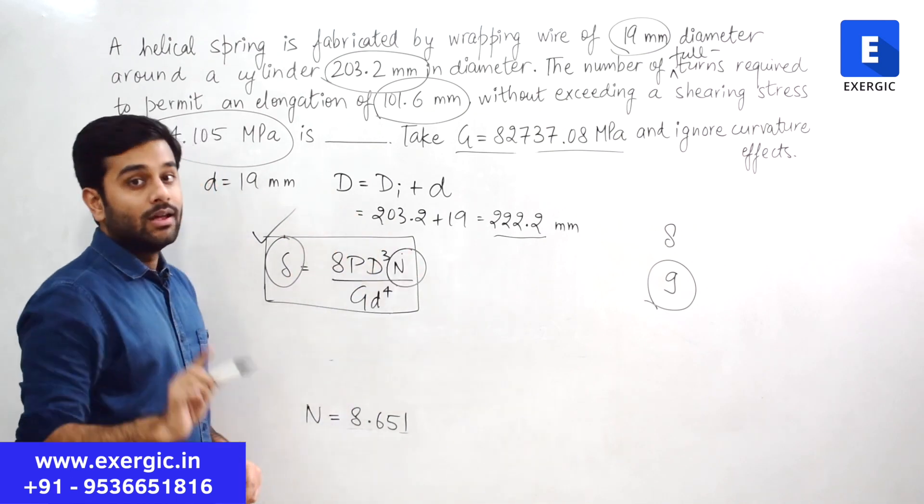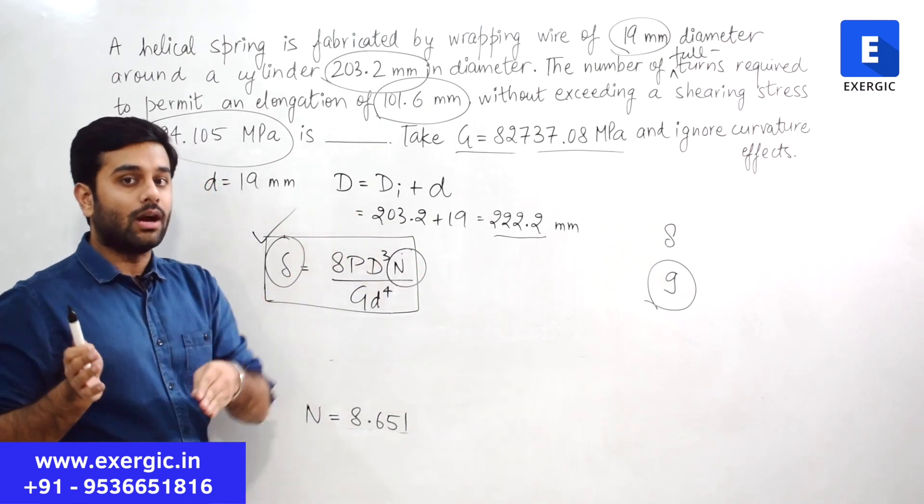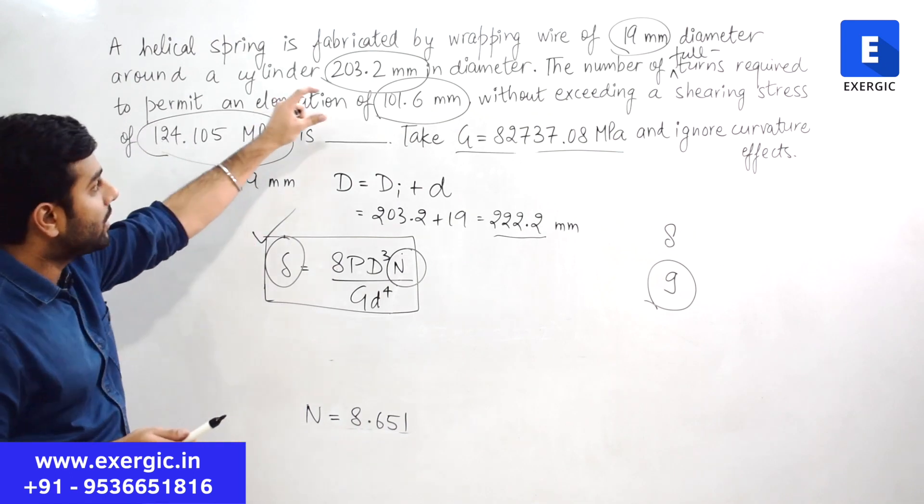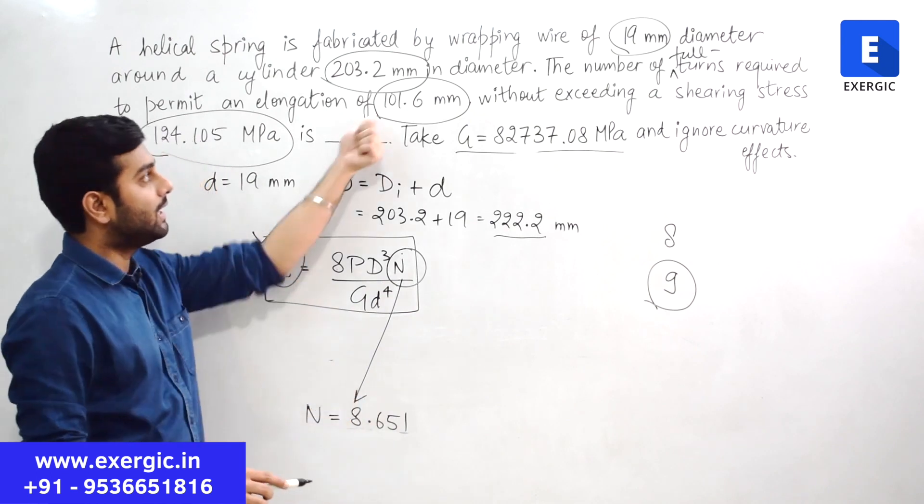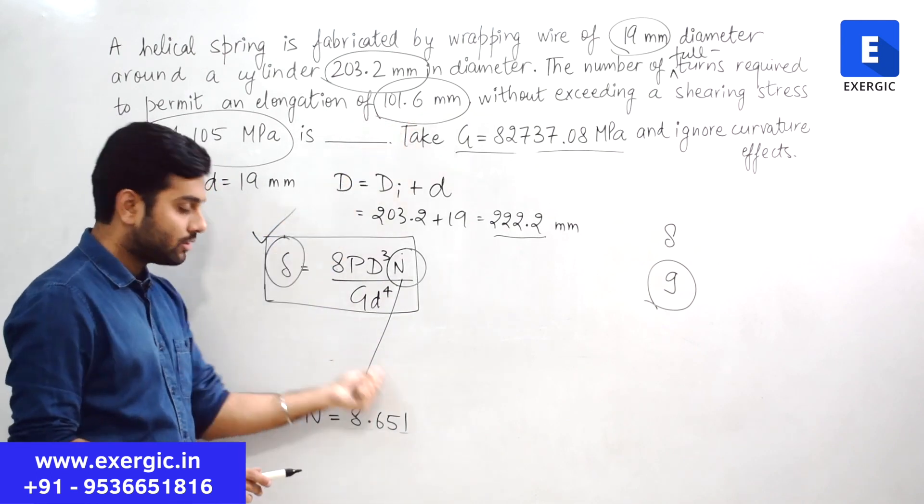Forget about rest of the values. All of them are same, not changing. The value of N, if you want to permit or allow only the deflection of 101.6 is this one. Right? We put the value of del as 101.6. Only then we got this answer. Right?